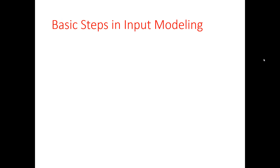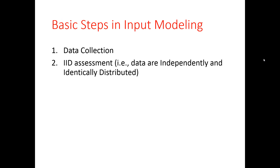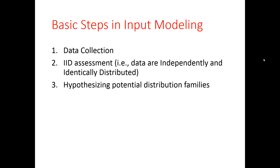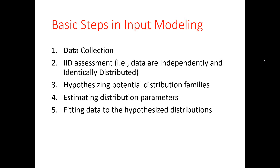Let's talk about the basic steps in input analysis. The first step is data collection. The second step is IID assessment, where we determine that the data are independently and identically distributed. The third step involves hypothesizing about potential distribution families for the collected data. The fourth step involves estimating distribution parameters. Finally, we use statistical goodness of fit tests to assess the fit of the hypothesized distribution to the data.